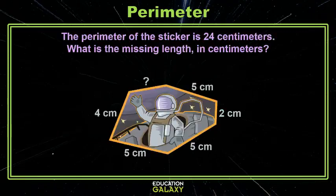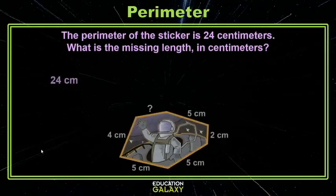Okay, let's try one more of those. Here, we're given the perimeter and we have all of the side lengths but 1. So let's start with our total of 24. Let's subtract off what we do know.